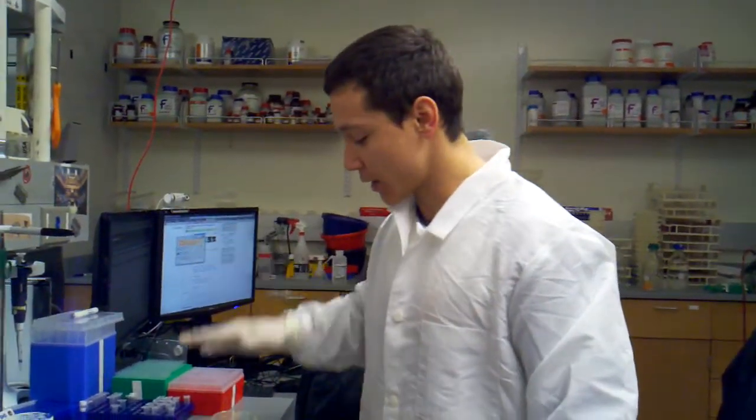Hey guys, we're going to finish up our chemical competent transformation. We put some plasmid DNA into some competent cells out of the negative 80. We heat shocked them. We then recovered them at 37 degrees in the shaker down in the corner. And now we're going to plate them.